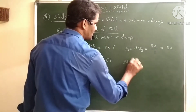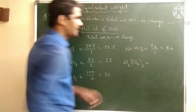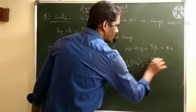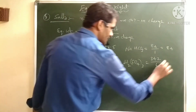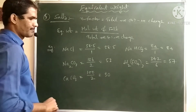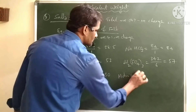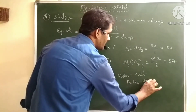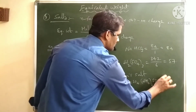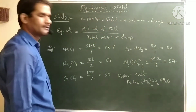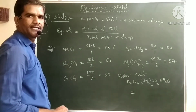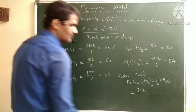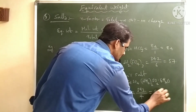Now some other salts. For aluminum sulfate, the total positive or negative charge — that is the n-factor — is 6, and molar mass is 342, so 342 divided by 6 gives equivalent weight 57. For Mohr's salt — ferrous ammonium sulfate hexahydrate, FeSO₄·(NH₄)₂SO₄·6H₂O — molecular weight is 392 and n-factor is 4, giving equivalent weight 98.